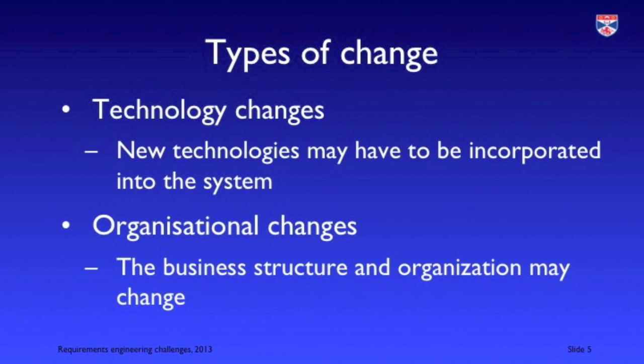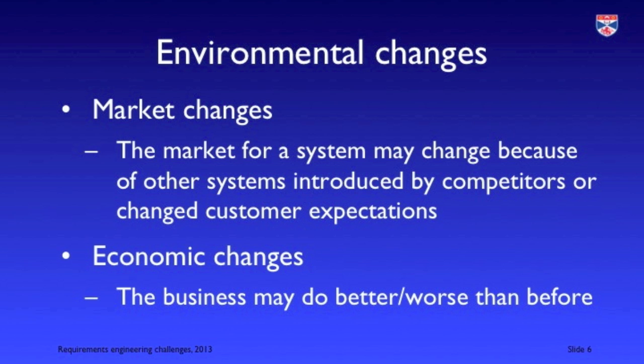There are different kinds of change that may occur. We may have technology change where some new technology is introduced. There may be organisational changes where a company involved in a system procurement is taken over by another company, its structure has changed, hence changing the business processes and the requirements for the system. There may be market changes — for example, the introduction of tablet computers created a whole new market for apps, putting requirements on organisations to provide app access alongside web browser access. There are also economic changes where a business makes more or less profit and consequently has to scale up or scale down and cut its costs.